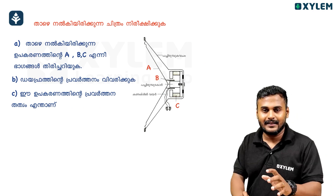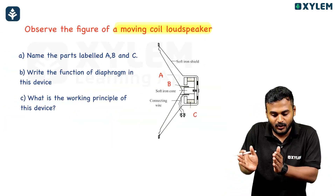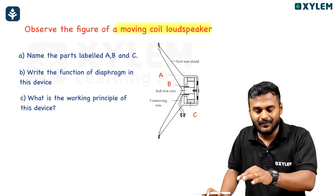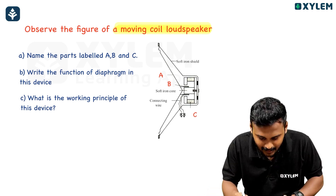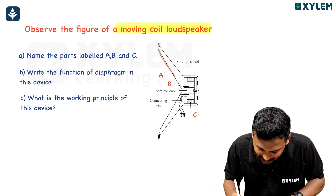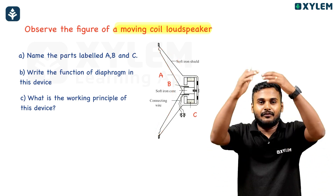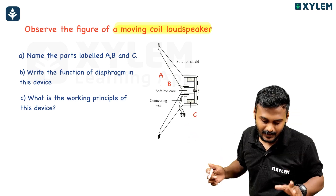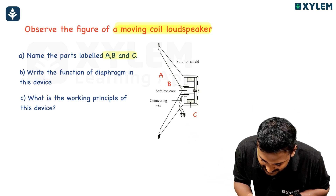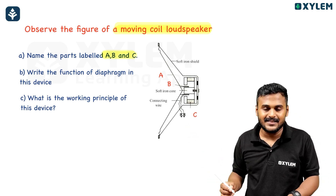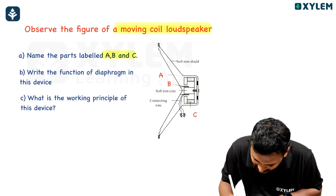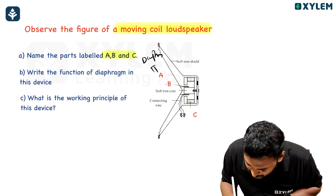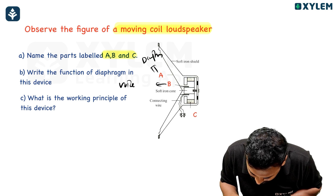Observe the figure of the moving coil loudspeaker. What is the working of a moving coil loudspeaker? Name the parts labeled A, B, C. A is the diaphragm, B is the voice coil.